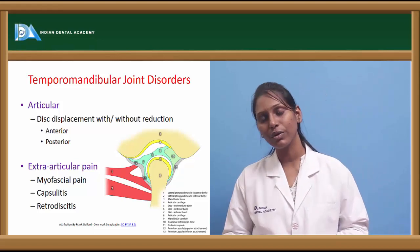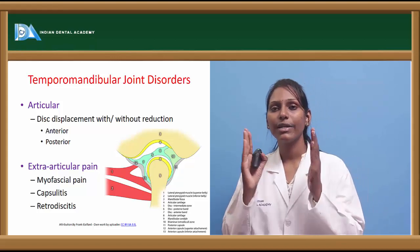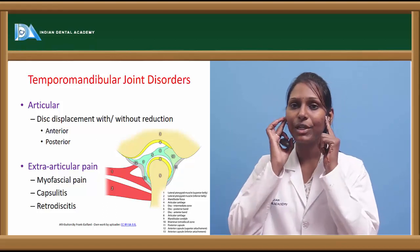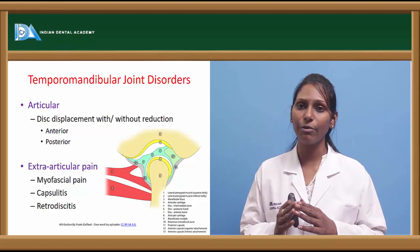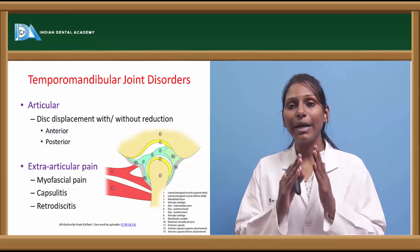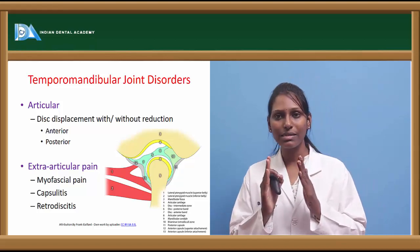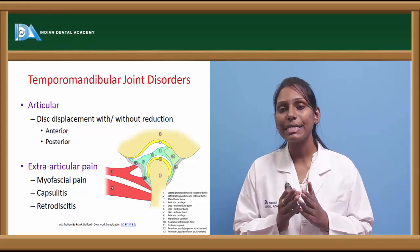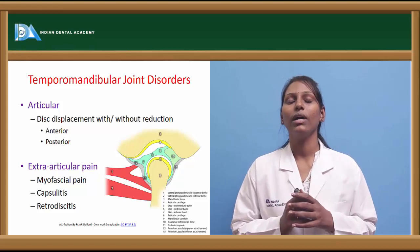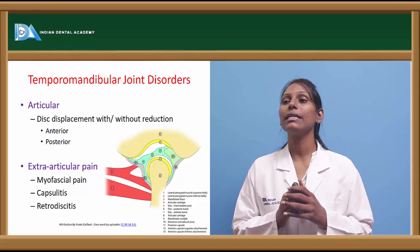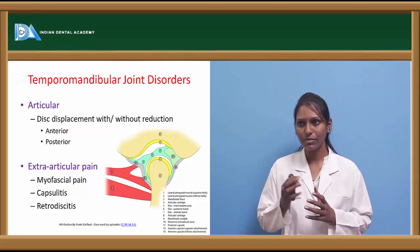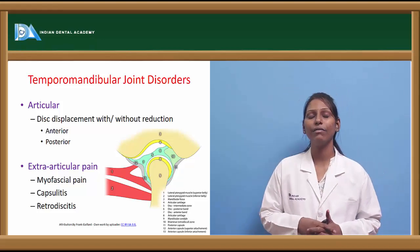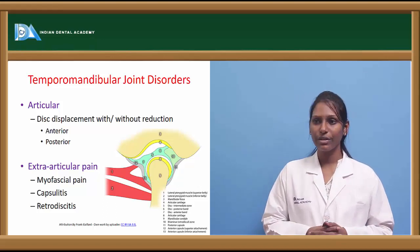Articular TMJ disorders include disc displacement with or without reduction, which can be anterior or posterior disc displacement. Common symptoms include tenderness in the preauricular region, pain on opening or closing the mouth, deviation of the mandible to one side, and a clicking sound in most cases, though some cases present without clicking.